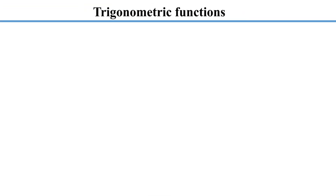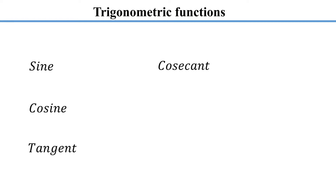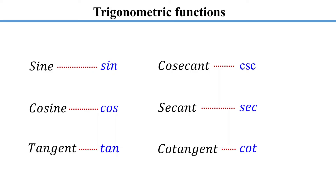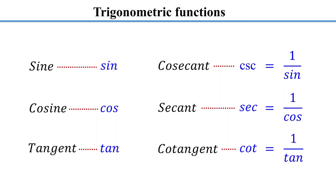There are six trigonometric functions: sine, cosine, tangent, cosecant, secant, and cotangent. Sine, cosine, and tangent are the basic trigonometric functions, while the other three are their reciprocals. Cosecant is the reciprocal of sine, secant is the reciprocal of cosine, and cotangent is the reciprocal of tangent.